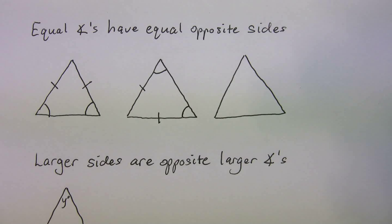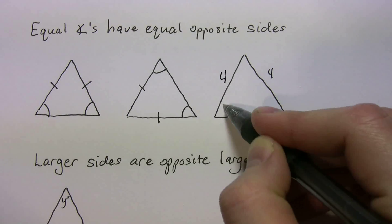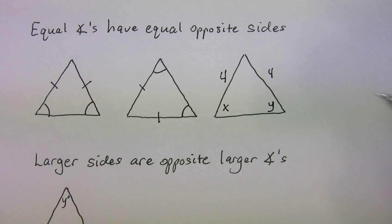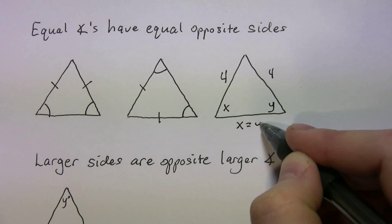A way on the SAT that they might test you with this, and I've seen this on questions before, where maybe they'll tell you that this is 4, and this is 4, and this is x, and this is y, and there's probably some other information, but the main thing that you need to get out of this, what can you say about x and y? You can say that x equals y.